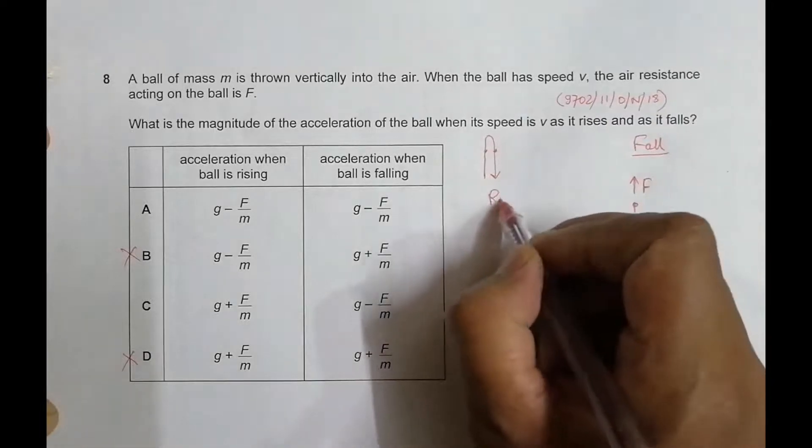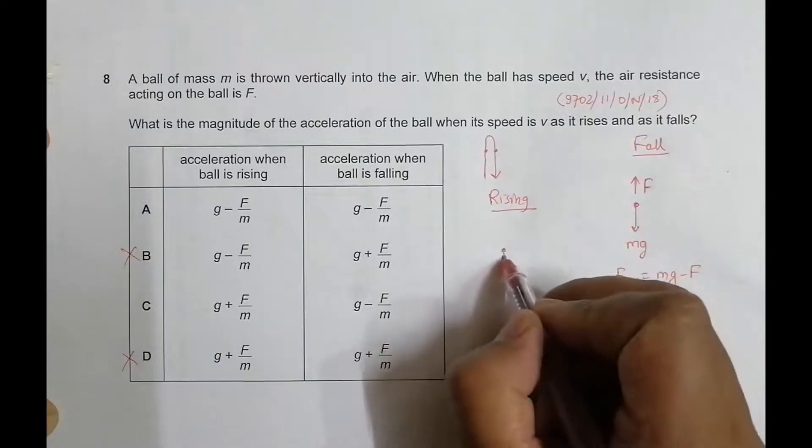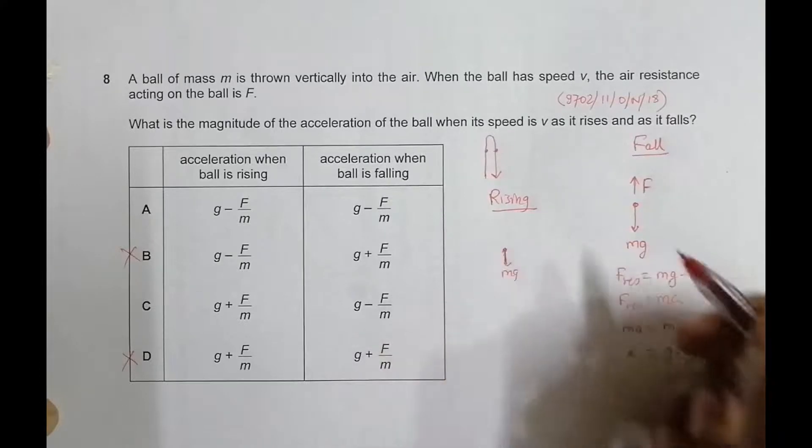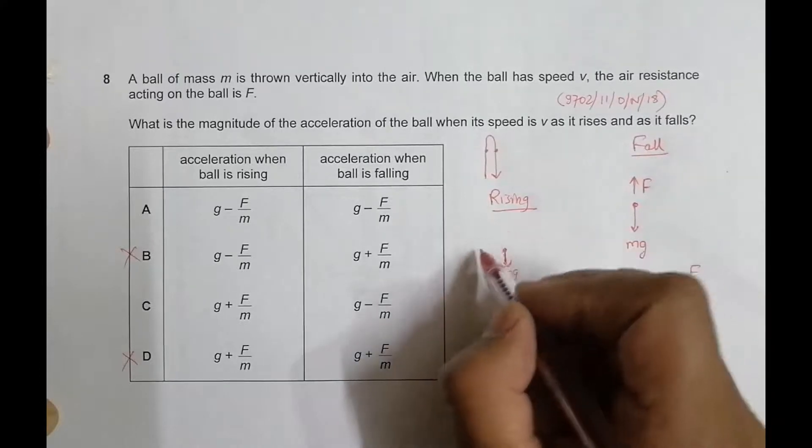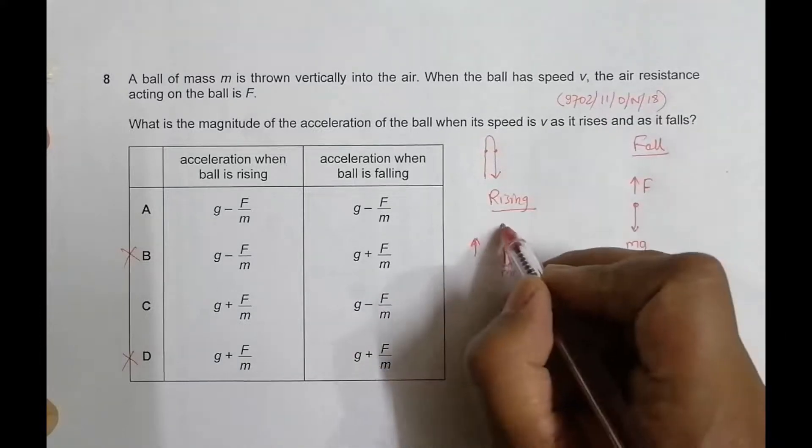Now when it is rising, let's say at that time the force of gravity on it is still Mg and since it is rising, that means since it is going up here, the opposing force should be like this. This should be the opposing force.